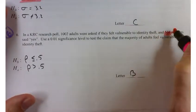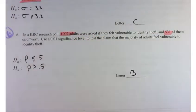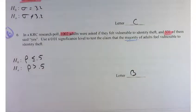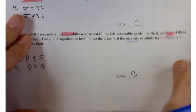And test the claim that the majority. Now the majority happens when you're greater than 50%. So that's a population proportion.